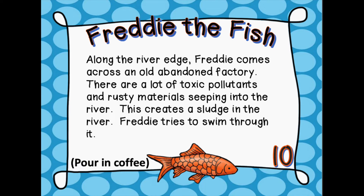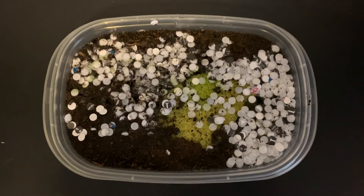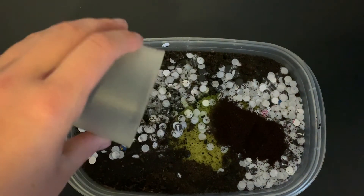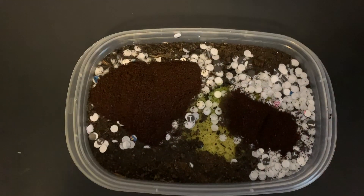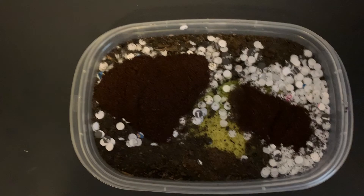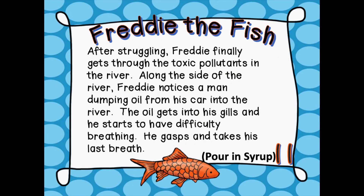Along the river edge, Freddie comes across an old abandoned factory. There are a lot of toxic pollutants and rusty materials seeping into the river, creating a sludge. Freddie tries to swim through it. Now we're going to add our coffee — this is like the sludge from the factory. He's clearly having a really hard time because we can barely see Freddie now.